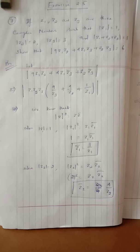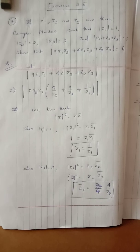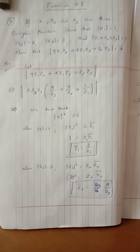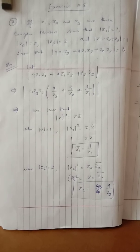As explained, with three terms, we will be pulling out Z1, Z2, and Z3.